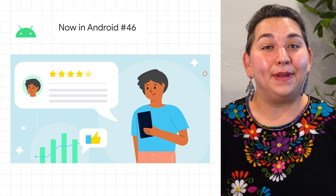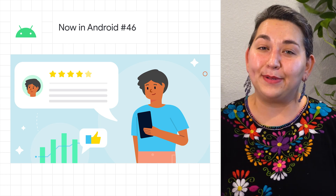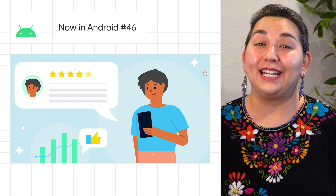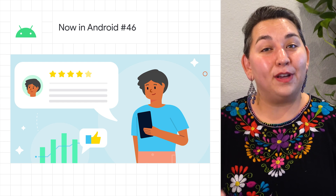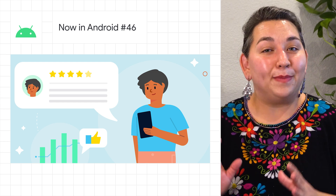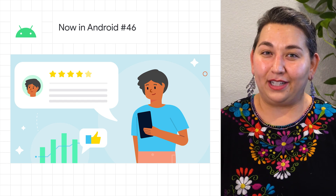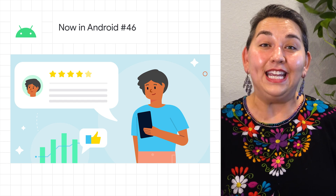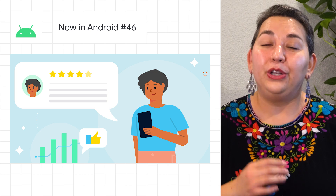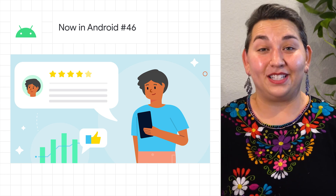Google Play is making ratings more personalized and explicit of the experience each individual user can expect. Starting November 2021, users are going to be seeing ratings specific to their registered country. Then, in early 2022, users will be seeing ratings specific to the device that they're using.